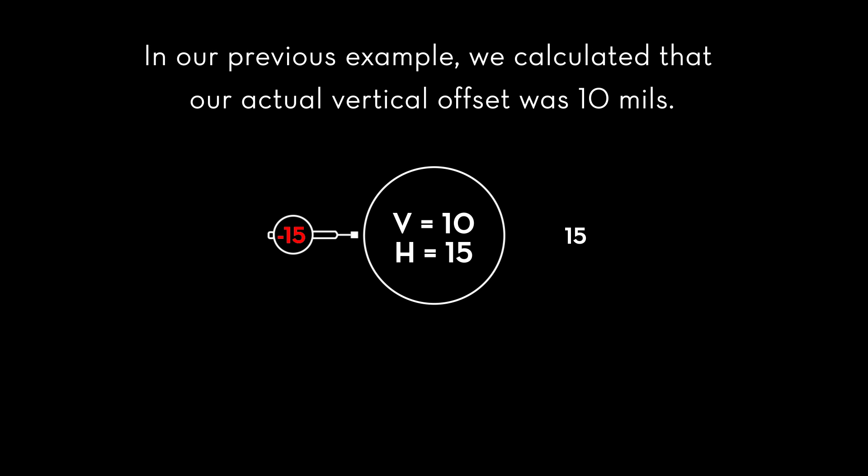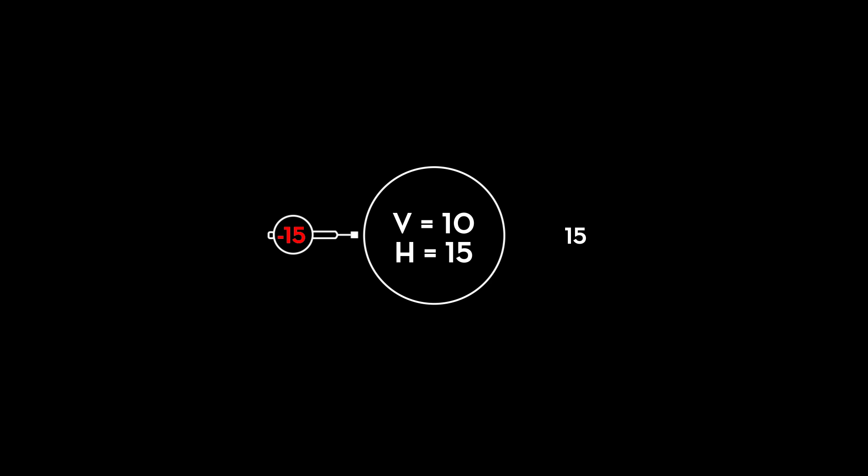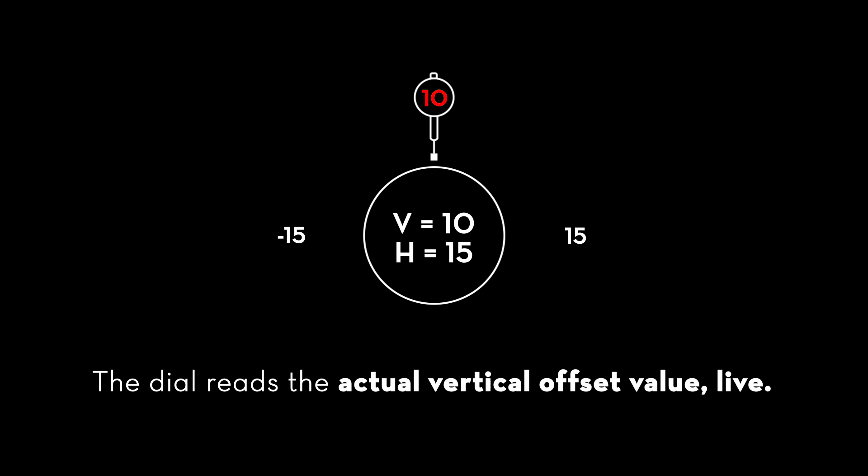In our previous example, we calculated that our actual vertical offset was 10 mils. Now, if we roll the dial back to 12 o'clock, the dial reads the actual vertical offset value live, 10 mils.